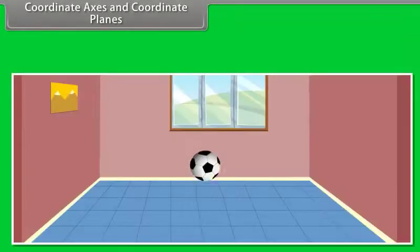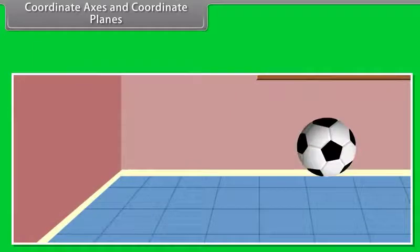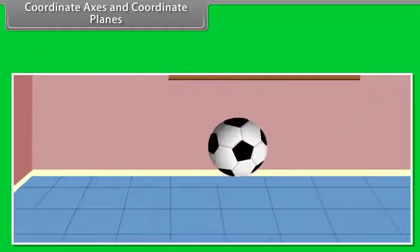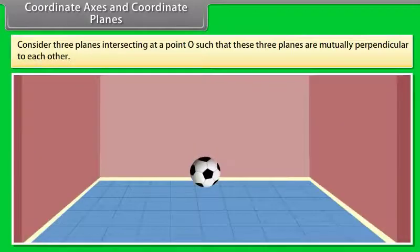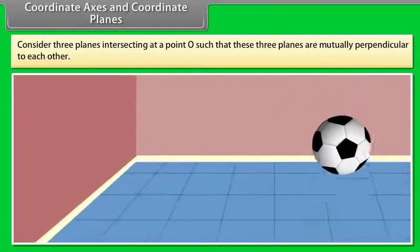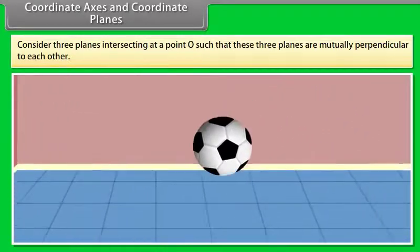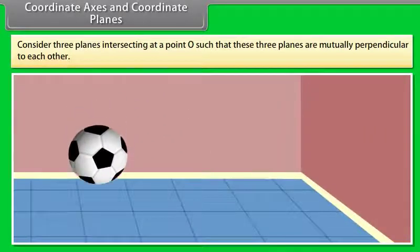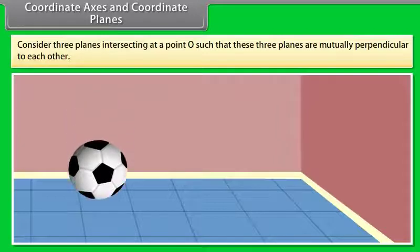Coordinate axes and coordinate planes. Let us take an example of a bouncing ball in a room where one corner of the room is considered as the origin. We can take any corner of the room — for that matter any point of the room — as the origin of reference, and relative to that, the coordinates of the point change. Thus, the origin can be taken arbitrarily at any point of the room.